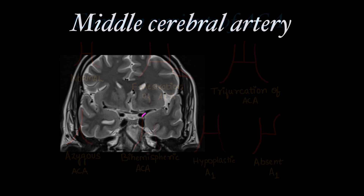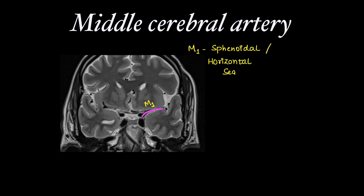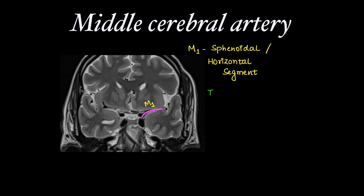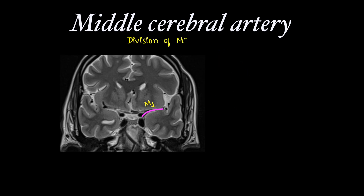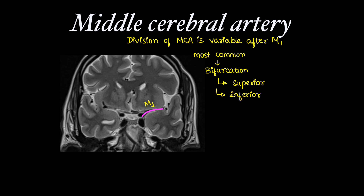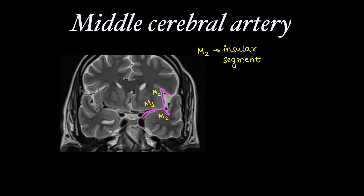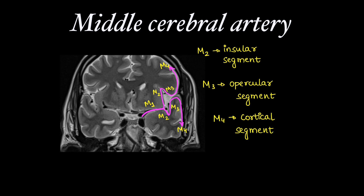Moving on to the parts of the middle cerebral artery: the M1 segment, also known as the sphenoidal or horizontal segment, has important branches including the medial and lateral lenticulostriate arteries and the anterior temporal artery. The division of MCA is variable after M1; most commonly M1 bifurcates into superior and inferior trunks. Both superior and inferior MCA show the M2 segment, also called the insular segment, the M3 segment called the opercular segment, and M4, the terminal or cortical segment.